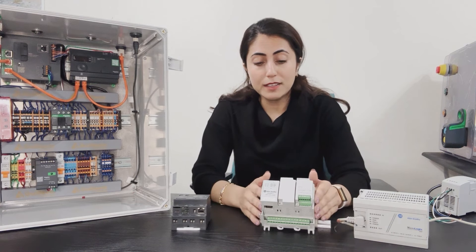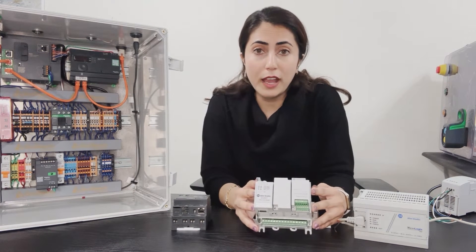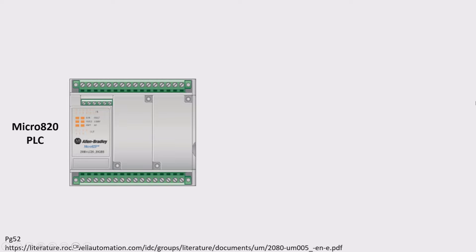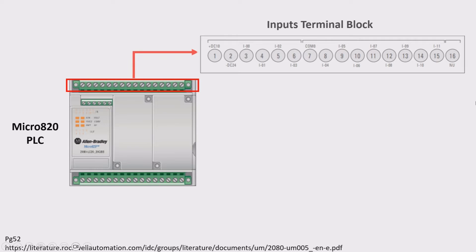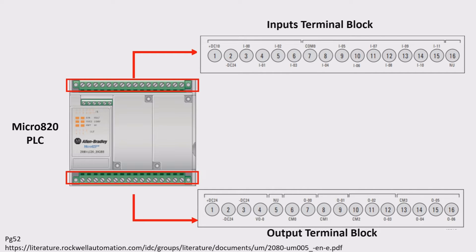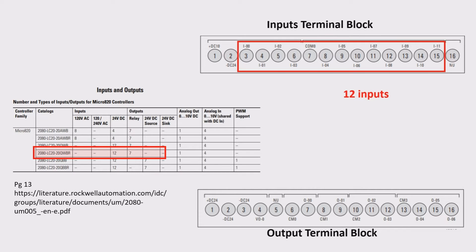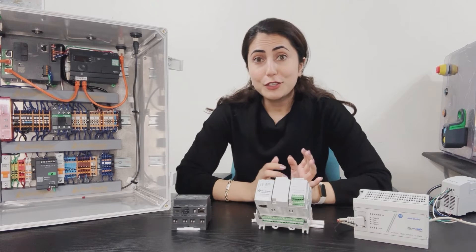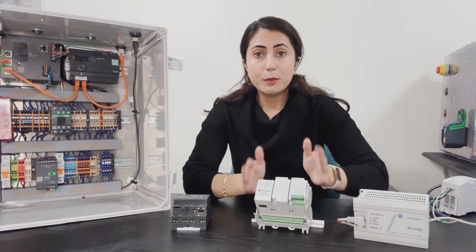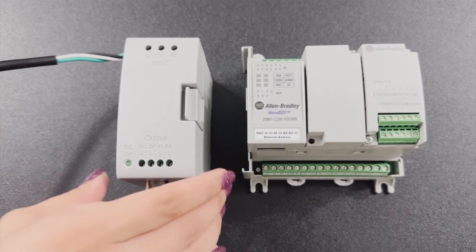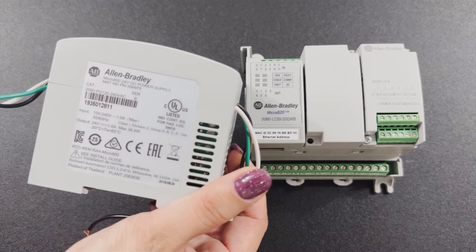I want to show you an example of this PLC, which is the Allen Bradley Micro 820. This Allen Bradley Micro 820 PLC has the input pins here and the output pins here. Also when referring to the manual I get more information about the device itself. For example, I know that this specific model type has 12 inputs and 7 outputs. For a PLC you need a power supply, so for the Micro 820 I have a power supply from Allen Bradley that I can connect to it.